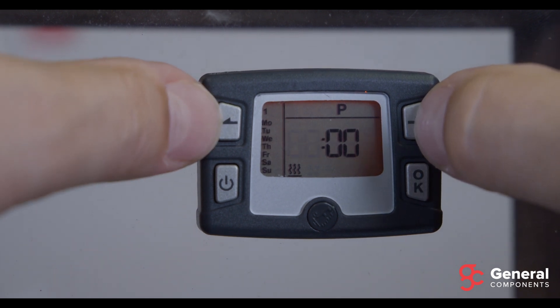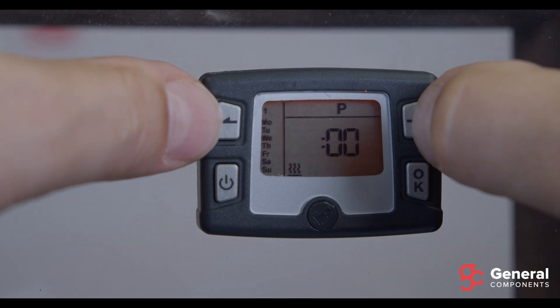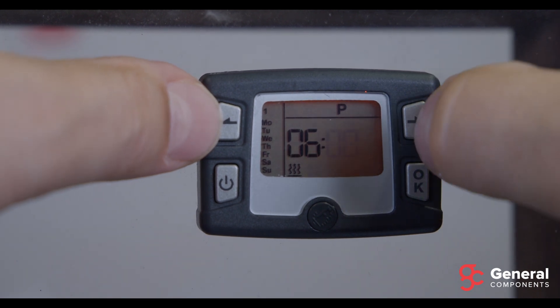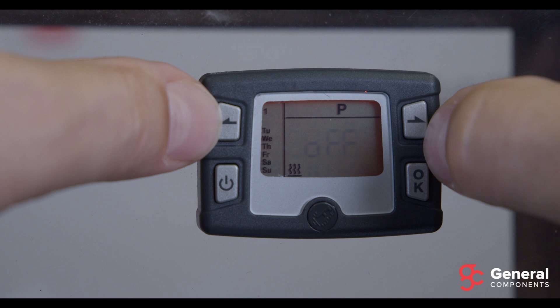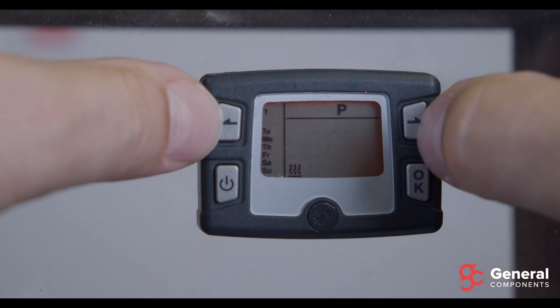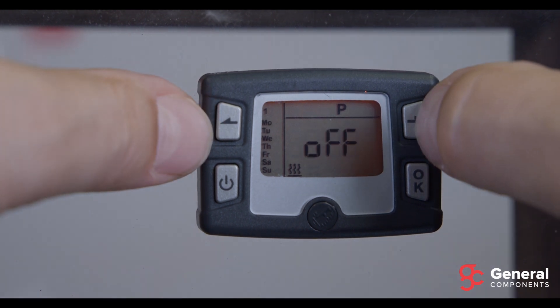Next up, we need to give this program a start time. Let's have the heater start up at 6:10 in the morning. And we're going to have the heater start up on Monday, so set Monday to ON by pressing the right arrow key, and then OK to confirm the heater will start up on Monday.